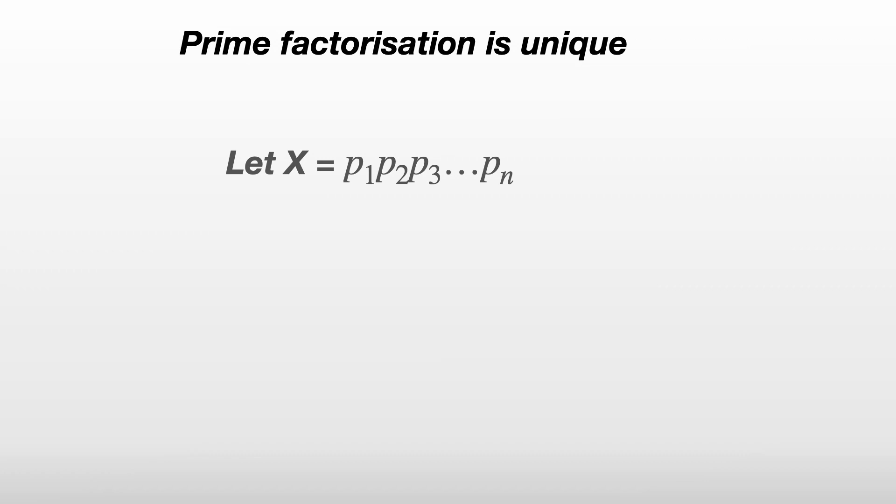So let x be some number and p1 to pn be the prime factorization of x. But let's also say that there's a different prime factorization of x, p1' to pn'. Apologies for the confusing notation by the way. This little dash above p1 to pn is called prime, and that's totally unrelated to prime numbers. So p1' to pn' is our second prime factorization of x.